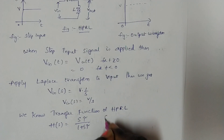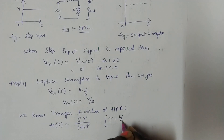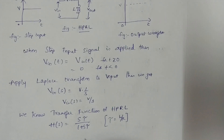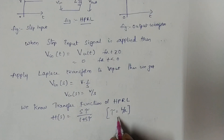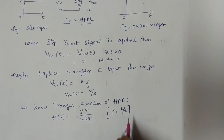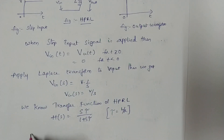Here, τ is nothing but L/R. Remember this — it is not RC. In the high-pass RL network, τ = L/R.